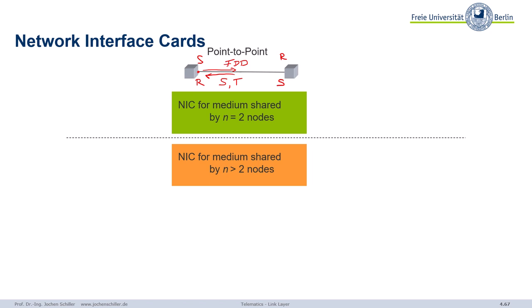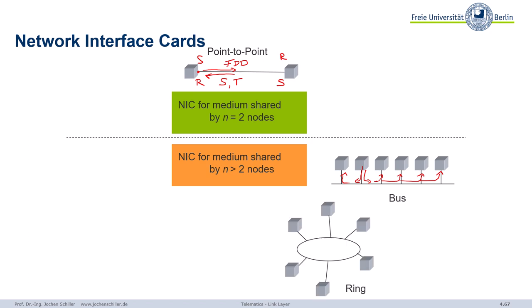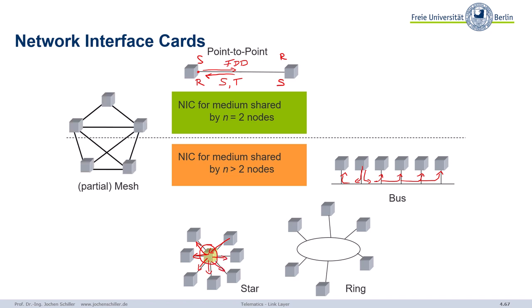But as soon as we share the medium with more than two nodes, we have to control the access. For example, a bus system — that was the classical old Ethernet — or a wireless system. As soon as you send data onto a bus medium, all the others will receive it; this is broadcast by nature. We could also have rings for resilience, or stars with a simple component in the center that broadcasts a message to all others.